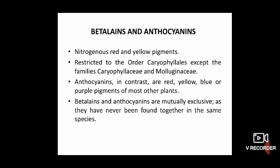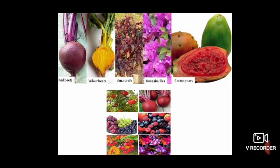Betalains and anthocyanins. Betalains are nitrogenous red and yellow pigments restricted to the order Caryophyllales, except the families Caryophyllaceae and Molluginaceae. Anthocyanins in contrast are red, yellow, blue, or purple pigments of most other plants. Betalains and anthocyanins are mutually exclusive as they have never been found together in the same species. Examples include red beets, yellow beets, amaranth, bougainvillea, cactus, and pears.